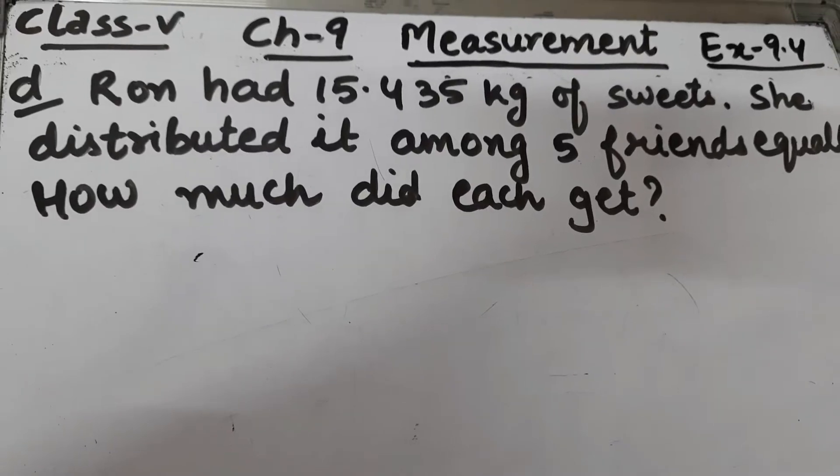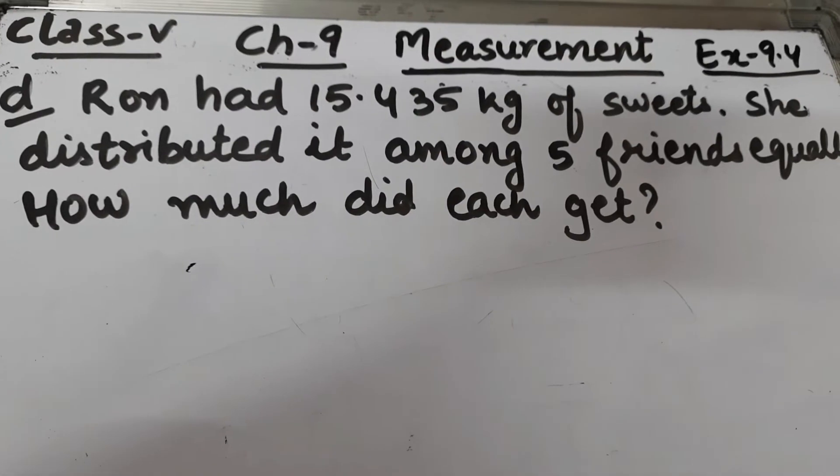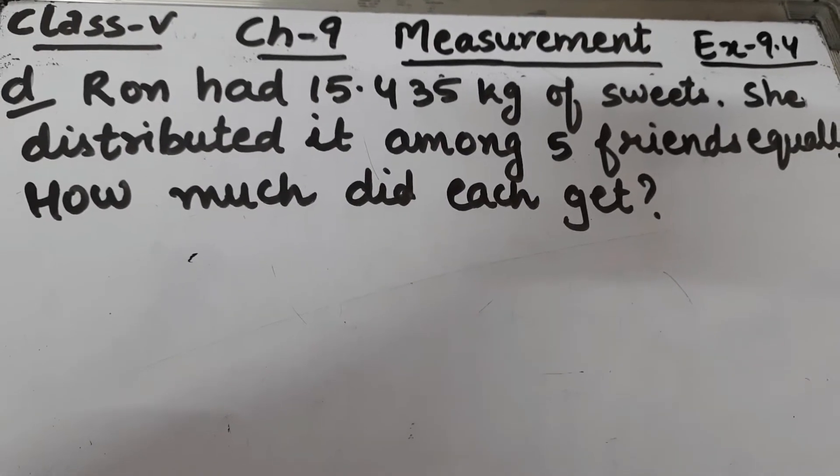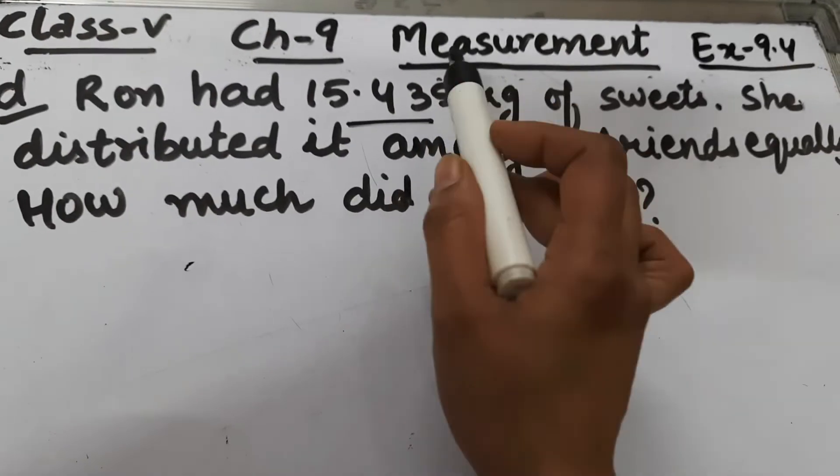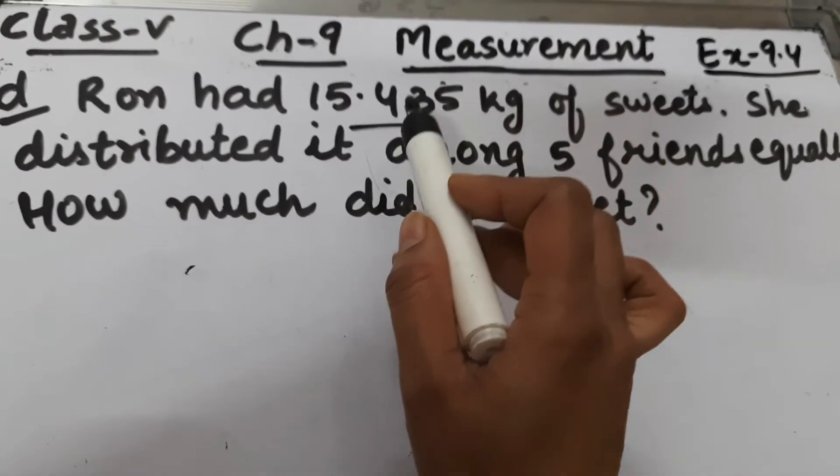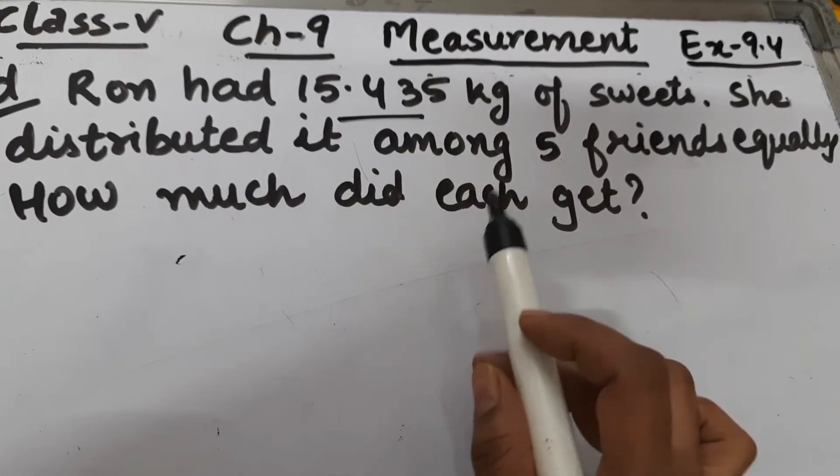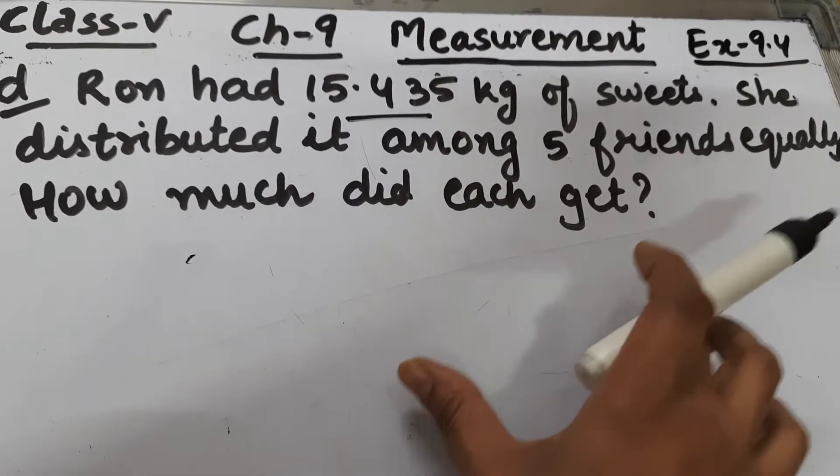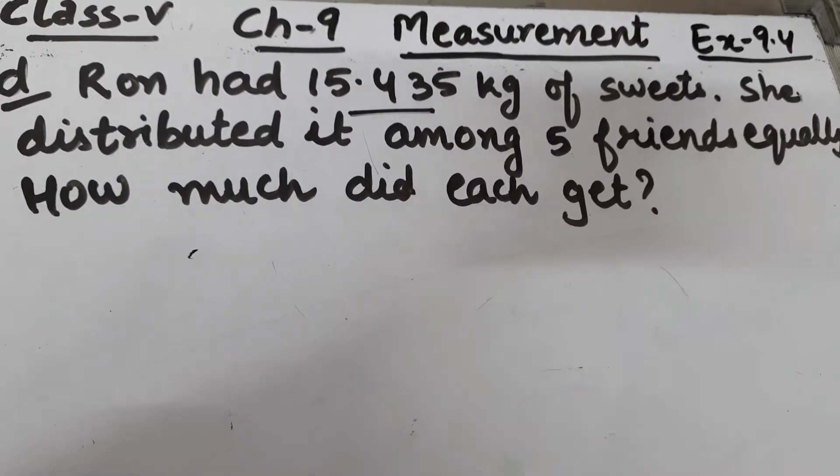Part D: Ron had 15.435 kg of sweets. She distributed it among five friends equally. How much did each friend get? Okay, what we have to find is how much did each friend get. So let's start the solution.